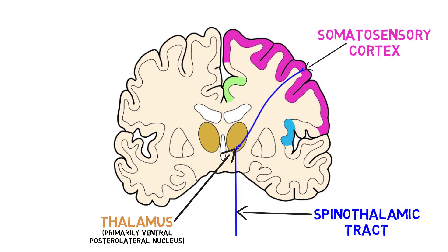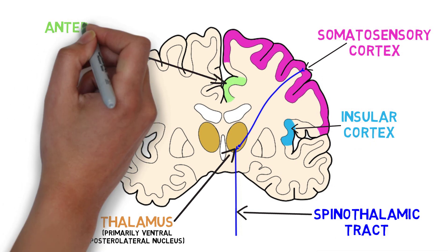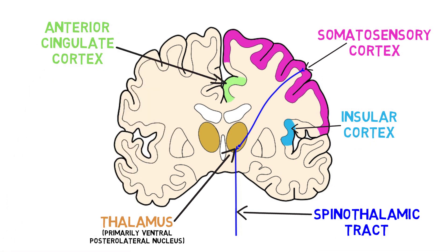But pain perception is not confined to the somatosensory cortex — many other regions are also thought to be involved. For example, areas like the insular cortex and anterior cingulate cortex also contribute to pain perception in various ways, such as by generating emotional responses to pain.